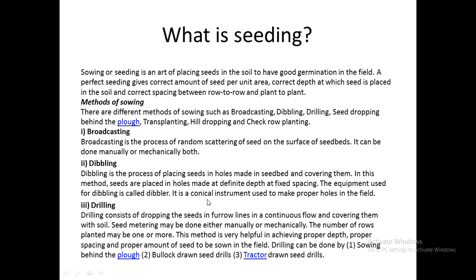Broadcasting is a random scattering of seeds in the field; it can be done manually or mechanically. Dibbling is the process of placing seeds in holes in the seed bed and covering them with soil. There are specific implements called dibblers used for placing seeds in holes made in the field — it is a conical syringe-like instrument.